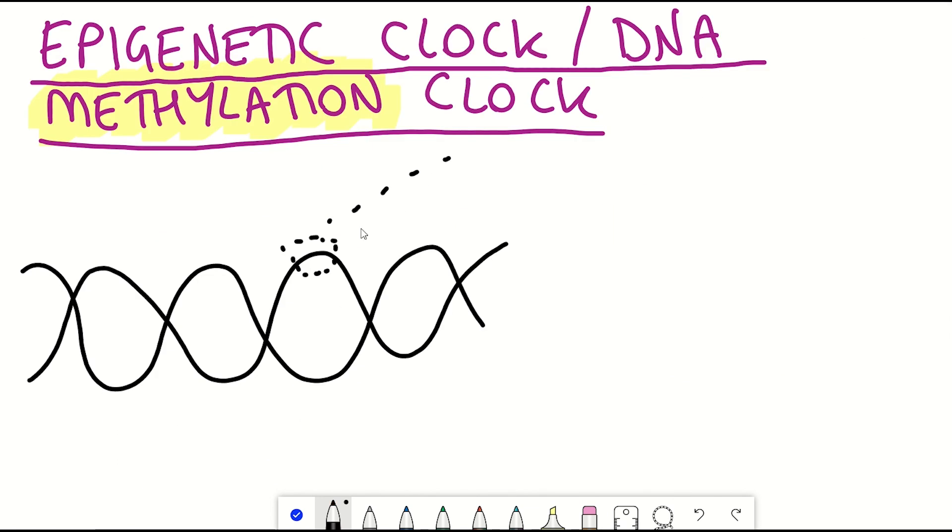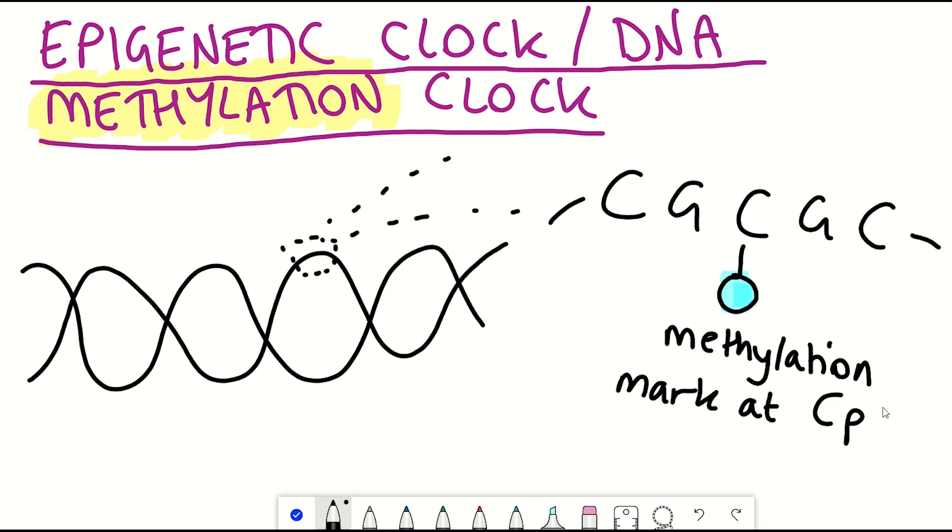So DNA methylation. You can think of this as tags on top of your DNA sequence. In particular the sites of methylation commonly employed in these studies are at certain genomic sites called CpGs. And it's the cytosine, the C, that gets the methylation.